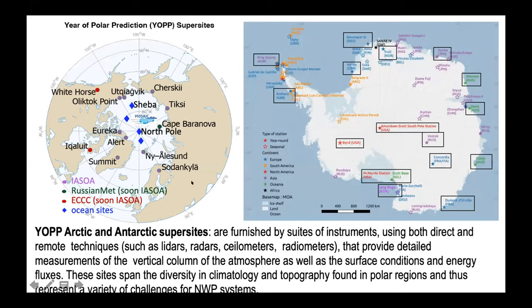This is a quick slide of all the different locations we have as candidates right now. A reminder that even though I'm very preoccupied with the Arctic, YAP is supposed to be about the Antarctic super sites as well. These are what we call super sites, where you have a lot of instruments gathering data on processes and not just MET stations gathering data on state variables.